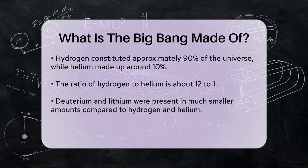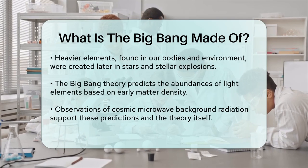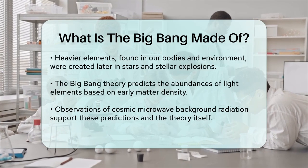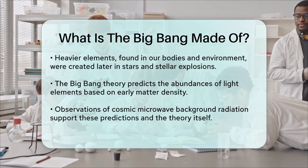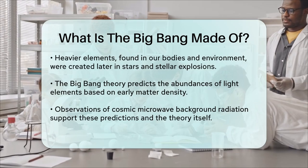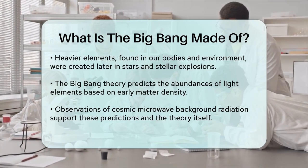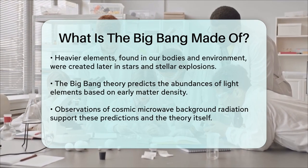The Big Bang theory also predicts the relative abundances of these light elements based on the density of matter in the universe during that early period. These predictions have been confirmed by observations of the cosmic microwave background radiation and the abundance of light elements in the universe.